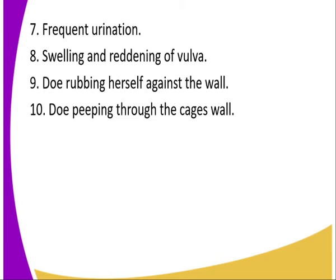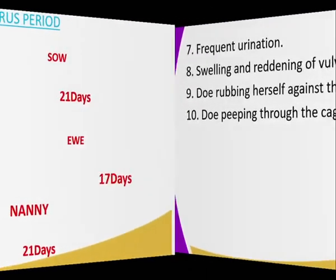They normally pass a lot of urine when they are on heat. Then the eighth sign is swelling and reddening of the vulva — that is the external part of the female reproductive system normally swells. Then we have the doe rubbing herself against the wall, and also the doe peeping through the cages to communicate with rabbits in the adjacent cage.